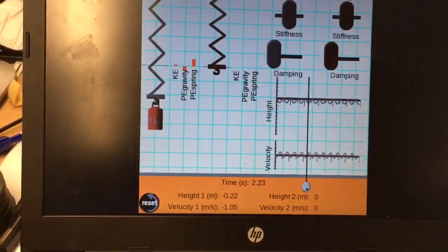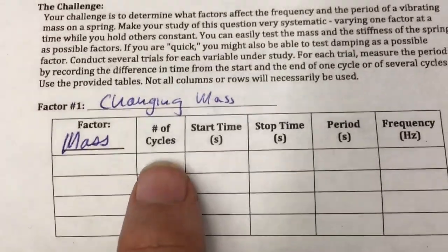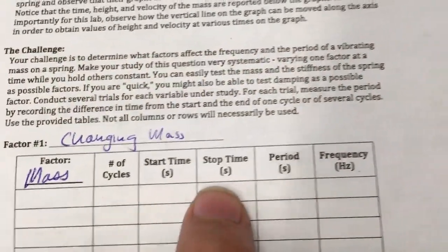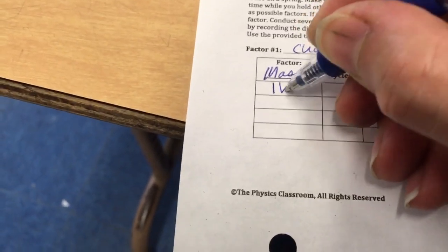So for instance, over here it says number of cycles, start time, stop time, period, and frequency. So first factor, since the factor is mass, I want to put 1 kilogram for the mass. That's the mass that I have.